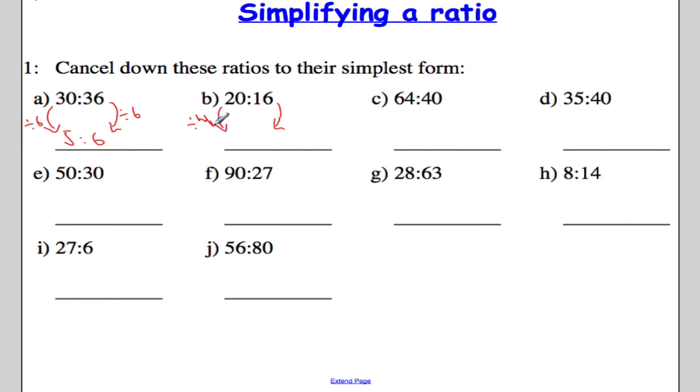So I'm going to divide both sides of the ratio by 4. 20 divided by 4 gives me 5. And 16 divided by 4 is 4. So this ratio in its simplest form is 5 to 4.